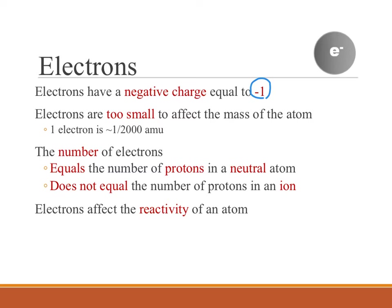Electrons are too small to affect the mass of the atom. An electron is about the size or by the mass of one two thousandth of an atomic mass unit. So even though atoms have electrons in them, they are not counted at all when it comes to counting the mass.